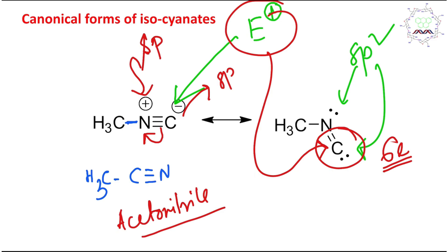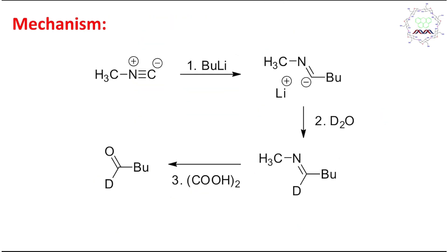Because this carbon is a sextet, it is electrophilic — it has a vacant orbital that can accept an electron pair. That is why nucleophilic attack can happen on this carbon. Butyl lithium acts as the nucleophile here, since it can act as both a base and a nucleophile. The first step of this reaction is nucleophilic addition by butyl lithium on the isocyanate carbon.